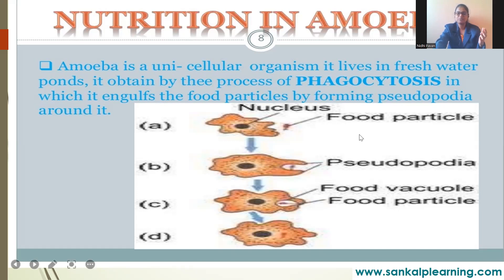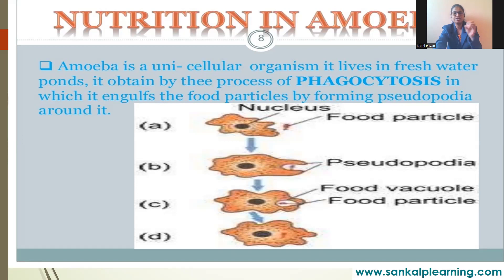Continuing the five steps: absorption — the digested particles are absorbed; assimilation — nutrients present in the food are utilized by the cells; and egestion — the waste created is released out. These are the five steps in nutrition in animals.